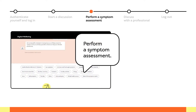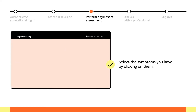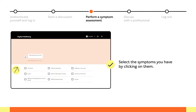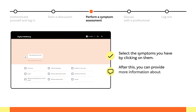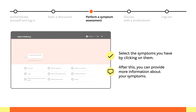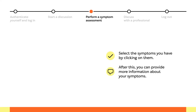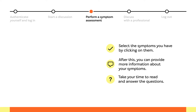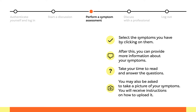Next, perform a symptom assessment. Select the symptoms you have by clicking on them. After this, you can provide more information about your symptoms. Take your time to read and answer the questions. You may also be asked to take a picture of your symptoms, and you will receive instructions on how to upload it.